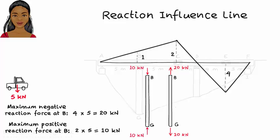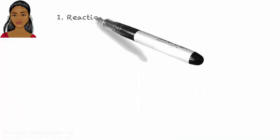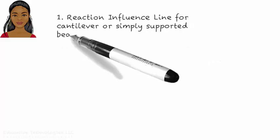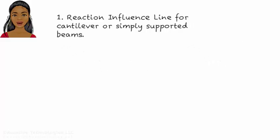Now let's turn our attention to the process of drawing reaction influence line for statically determinate beams. If the beam has no internal hinges, if it is a cantilever or a simply supported beam, then drawing a reaction influence line is rather straightforward.